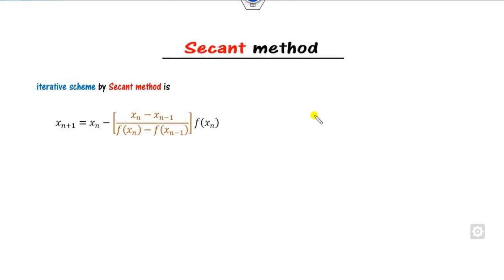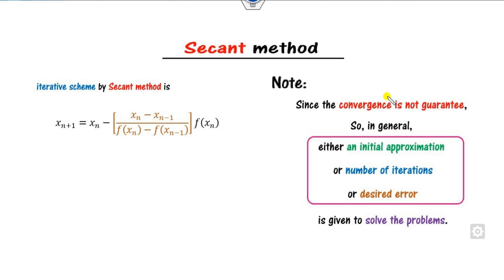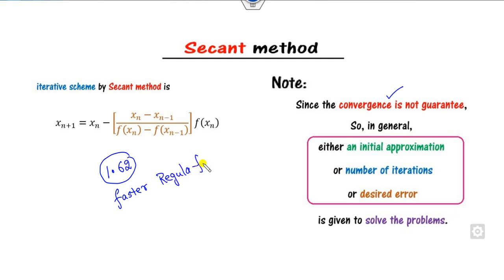In our last lecture, we discussed the secant method. We saw how to define the iterative scheme. We also discussed that convergence is not guaranteed, but once the secant method is convergent, the rate of convergence is 1.62, which is faster than the regular falsi method, which is also faster than the bisection method.